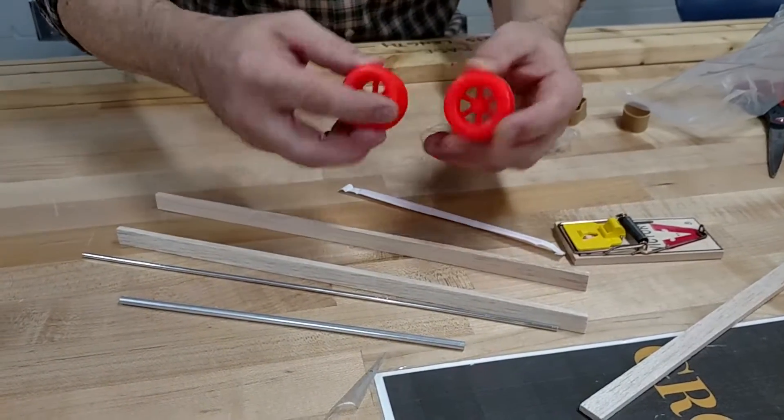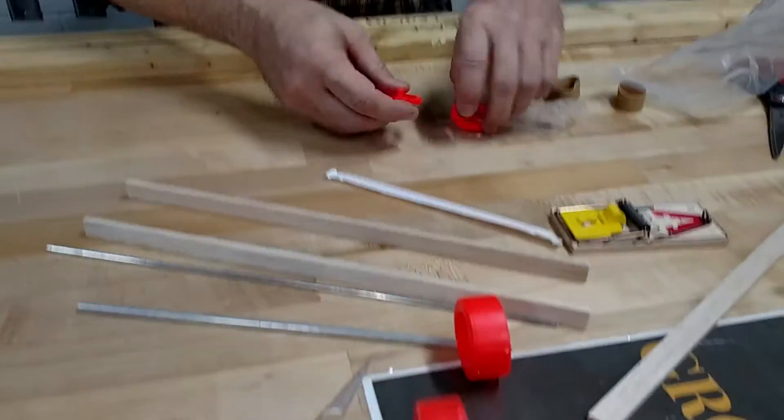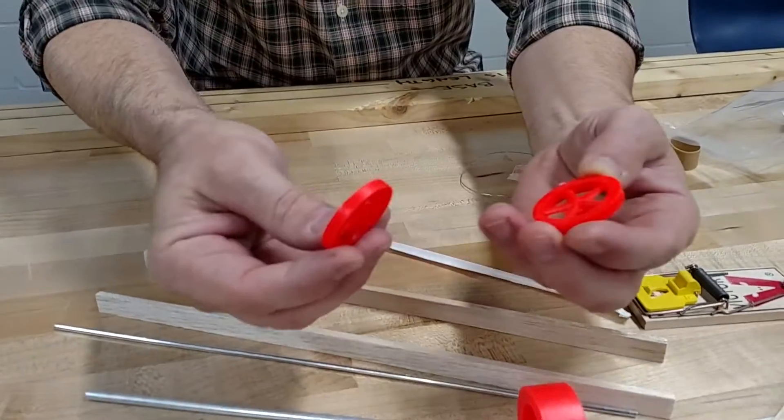We have wheels. These are our rear racer wheels. These guys. And you see they're a lot thicker. And you've got your front racer wheels.